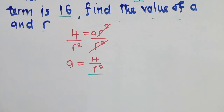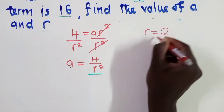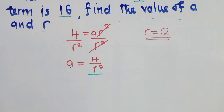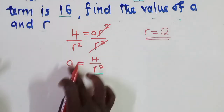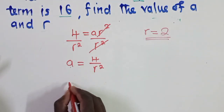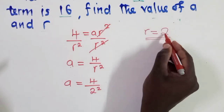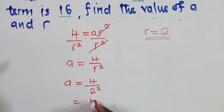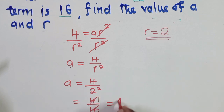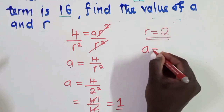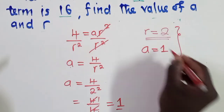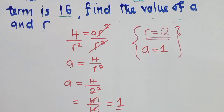Now to find a: we use a = 4 / r². Since r = 2, we substitute to get a = 4 / 2² = 4 / 4 = 1. So a = 1. Thank you so much for watching, and remember to subscribe.